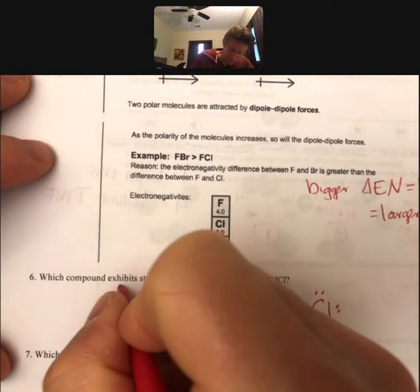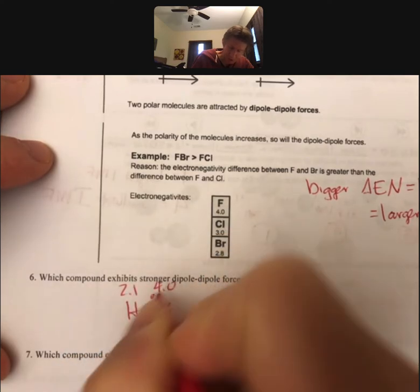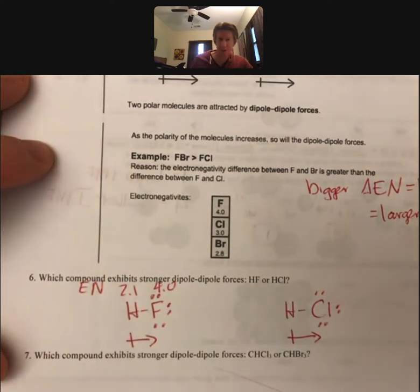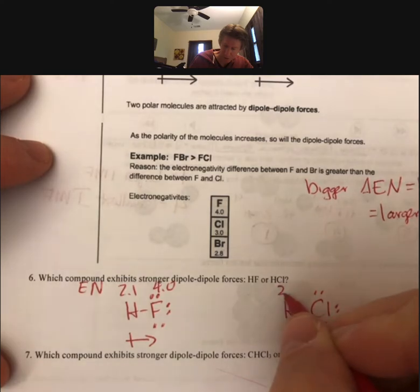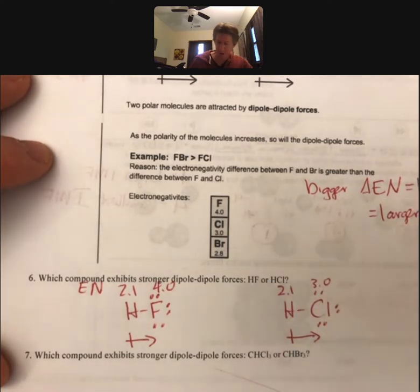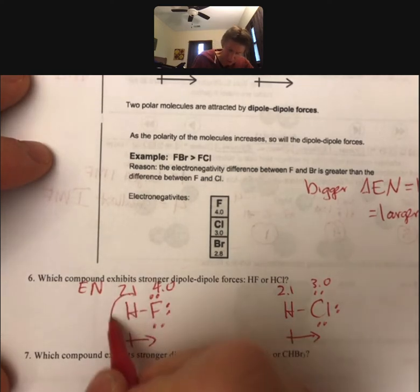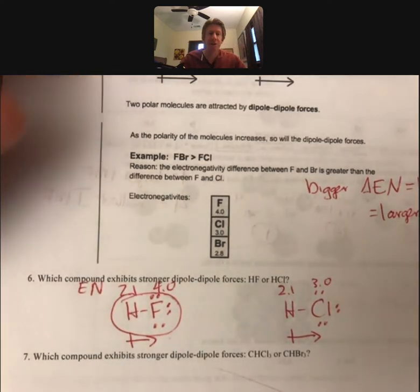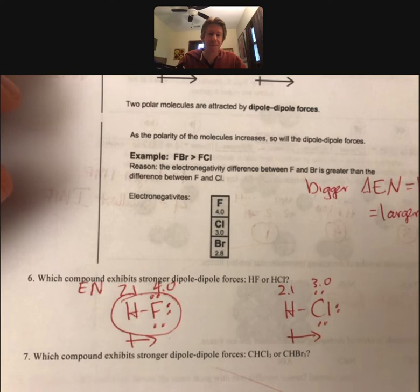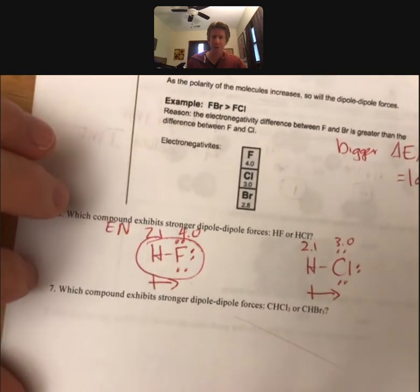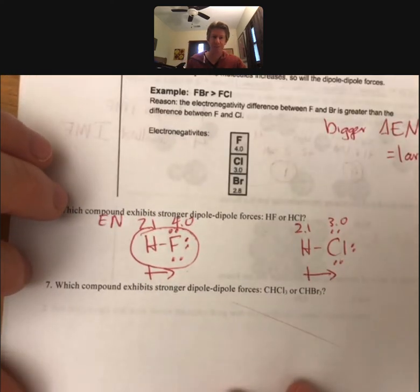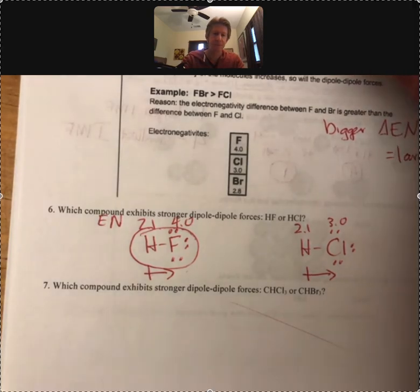So we have 2.1 and 4.0 for our electronegativity values. We have 2.1 and 3.0. So when you take the difference, we're going to get a bigger difference here, and so that's the one I'm going to circle. And I will allow you to do the next problem on your own.